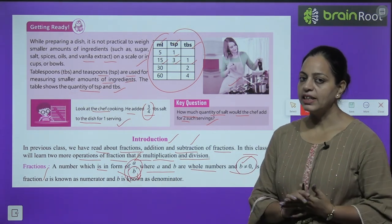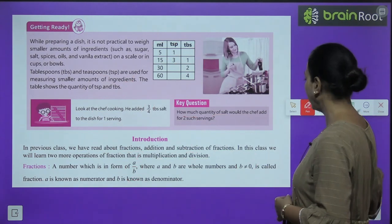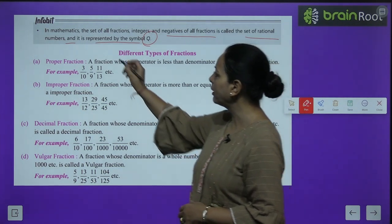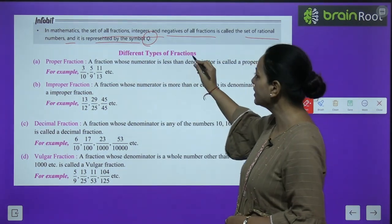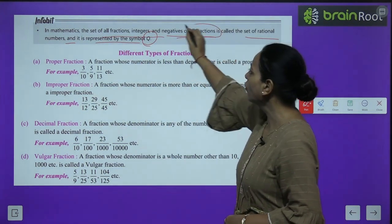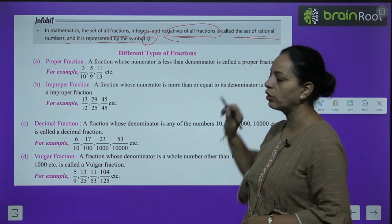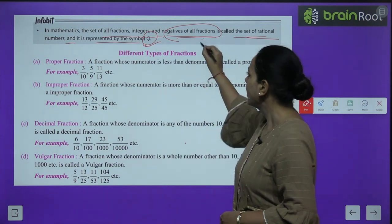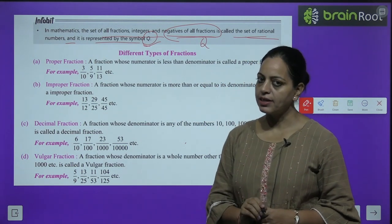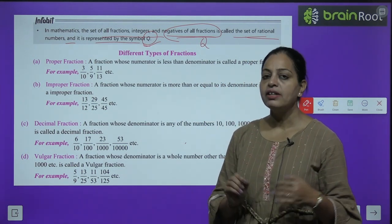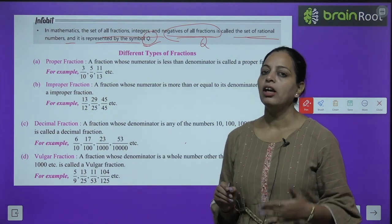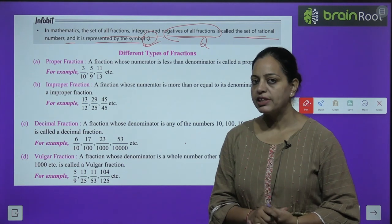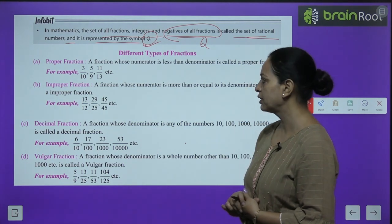One info bit: in mathematics, the set of all fractions, integers, and negatives of all fractions is called the set of rational numbers. Rational numbers ke baare mein aap higher class mein padhenge. Jab hum fractions ke negatives bhi le len aur integers ko bhi, ek complete set bana den — wo ban jaata hai hamaara rational numbers.